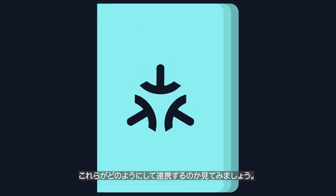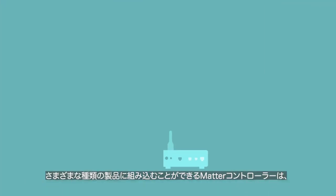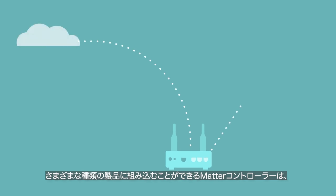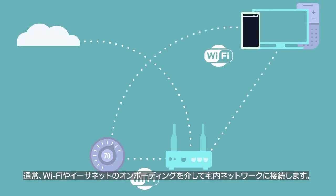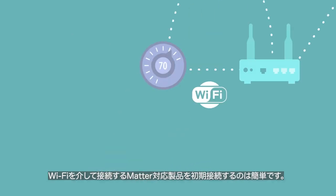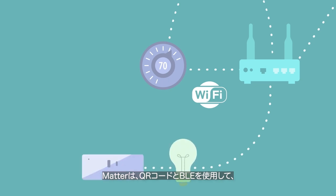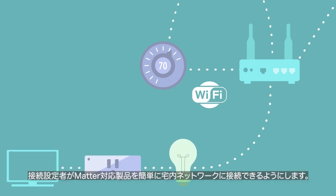Let's take a look at how all these pieces come together. Matter controllers, which can be built into many different types of devices, typically connect to a local network via Wi-Fi or Ethernet. Onboarding a new Matter Wi-Fi device is easy — Matter uses QR codes and Bluetooth Low Energy to simplify commissioning, allowing the commissioner to onboard it to your network.